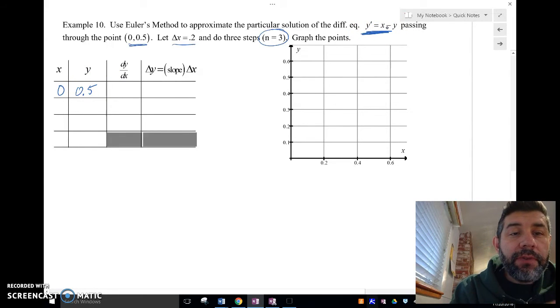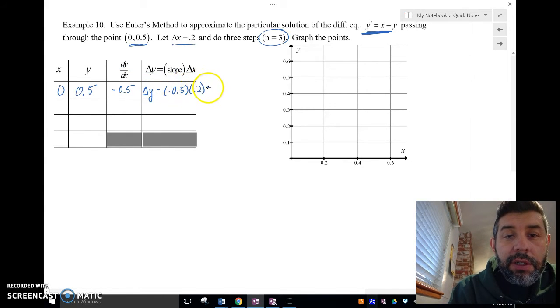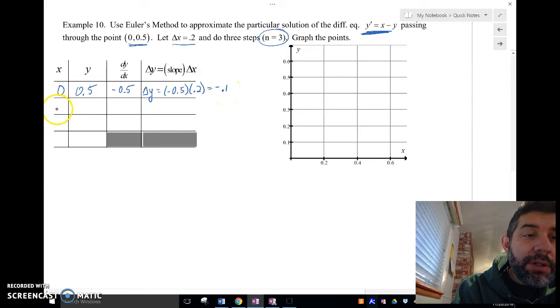And we're going to plug those into our differential here. So we're going to get 0 minus 0.5, which is going to be negative 0.5. And again, delta y is equal to negative 0.5 times delta x, which is going to give me negative 0.1. So then, this is now going to be delta x is 0.2. So I'm going to add 0.2 to 0. So I'm going to have 0.2. I'm going to take 0.5 and add it to negative 0.1 because that was my delta x. So that's going to give me 0.4. I'm going to plug these two guys in here for x minus y. So 0.2 minus 0.4 is going to be negative 0.2. And then I'm going to do this again.